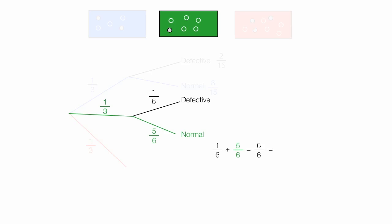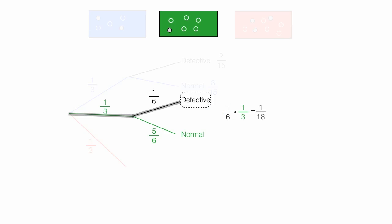So once I pick the green box, there's a 100% chance of picking a normal or a defective part. To calculate the probability of picking the green box then picking a defective part, I multiply one-sixth times one-third, which equals one over eighteen. The probability of picking the green box then picking a normal part is five-sixths times one-third, or five over eighteen.